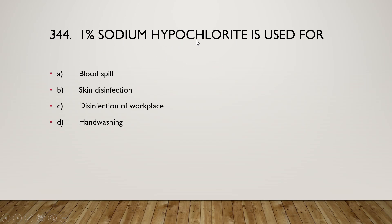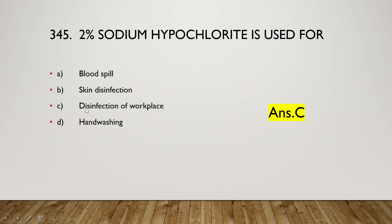1% sodium hypochlorite is used for blood spill, skin disinfection, disinfection of workplace, or hand washing? The right answer is option D — hand washing. 2% sodium hypochlorite is used for blood spill, skin disinfection, disinfection of workplace, or hand washing? The right answer is option C — disinfection of workplace. As we increase the concentration of sodium hypochlorite, it moves from sanitizer to disinfectant function.